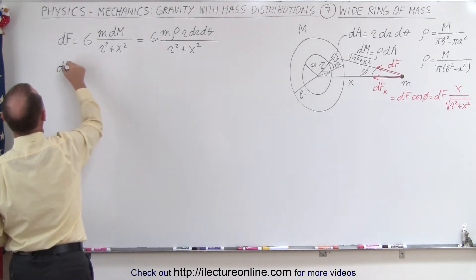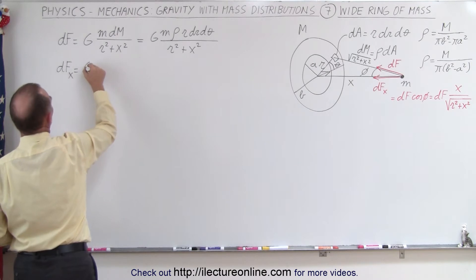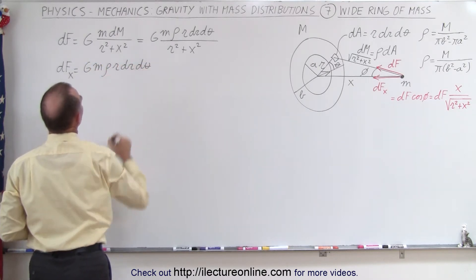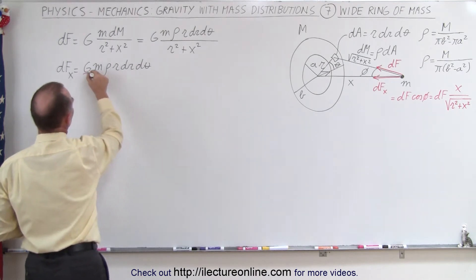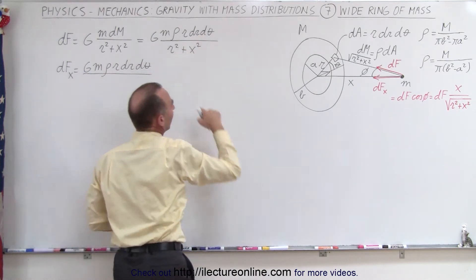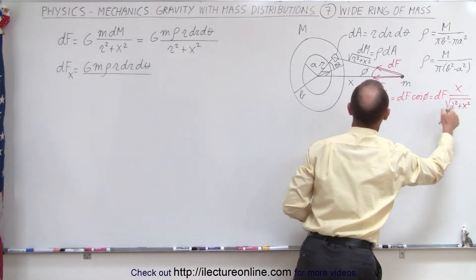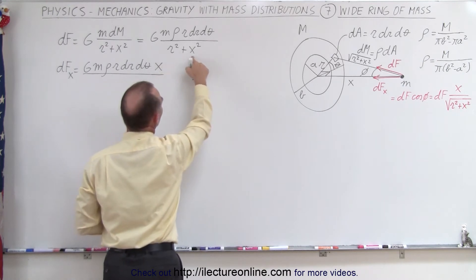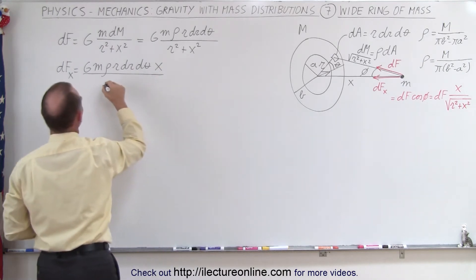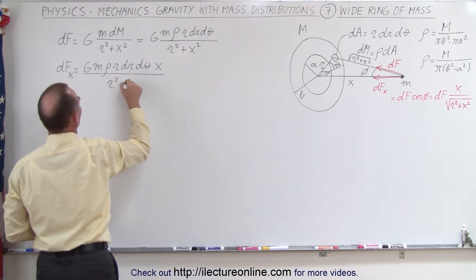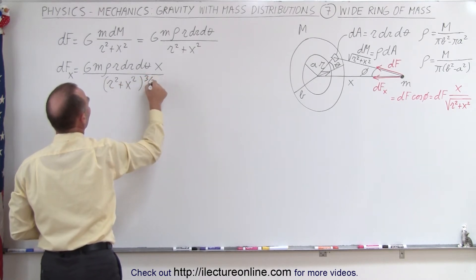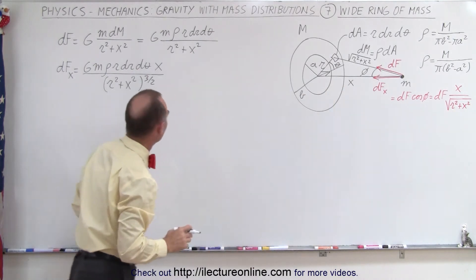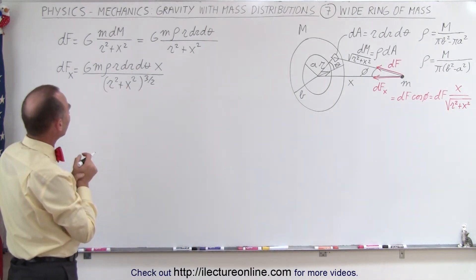So dFx equals GM·ρ·r dr dθ divided by — multiplying by x over the distance — we get x in the numerator and the denominator becomes (r² + x²) to the three-halves power. Now we're ready to integrate.